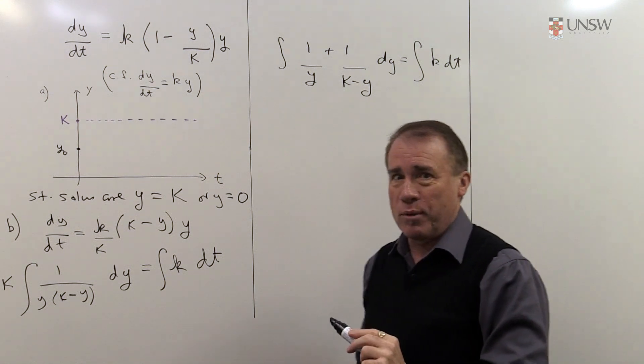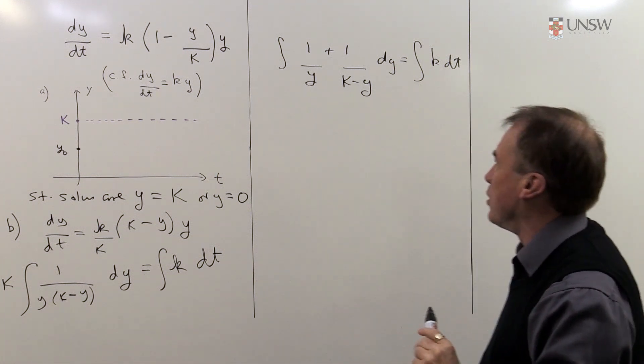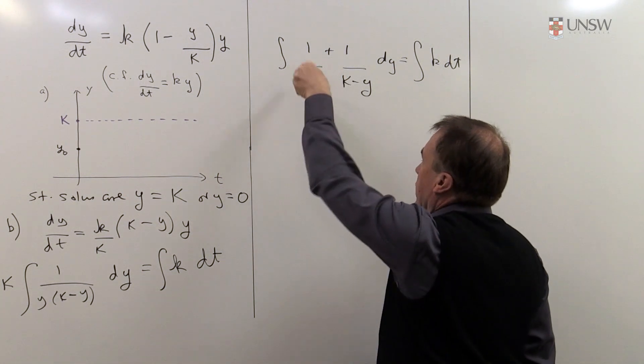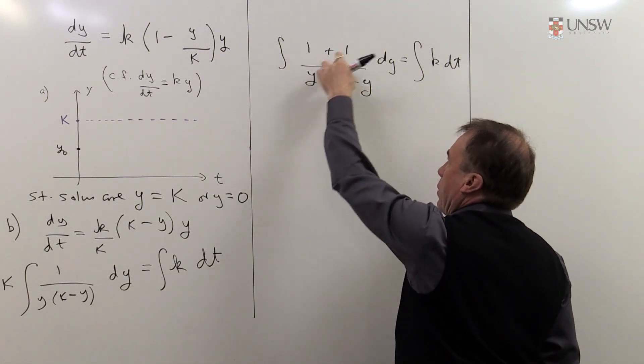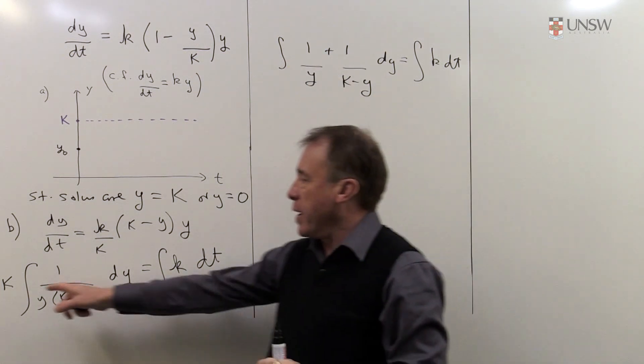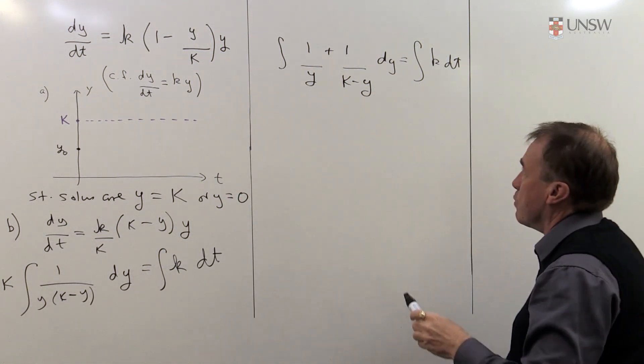This is what you might call partial fractions by inspiration. You just stare at it and see if you can do it quickly. If you now put these back over a common denominator again, you'll get k minus y plus y, which is k, and there was the k sitting out there. So there's the partial fraction form.